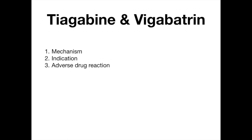Let's talk about two lower-yield drugs: tiagabine and vigabatrin. Their mechanism involves GABA activity. The way you remember this is you look at the names — tiagabine and vigabatrin both have 'GABA' in the name. It's got activity at GABA. That's literally all you need to know. If you see these drugs and they ask you the mechanism, look at the name and take the easy point.